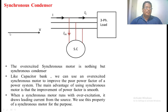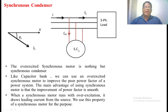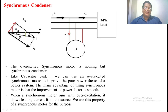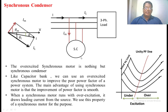This can be seen in the phasor diagram. We take voltage V as the reference. The load current IL lags the voltage by angle θL. When we connect a synchronous condenser across the load, it takes a leading current IM. The resultant of IM and IL gives the net supply current I. The angle between the voltage and this resultant current I is reduced, so the overall power factor is improved.